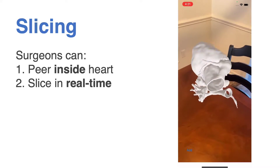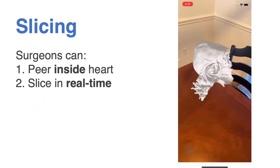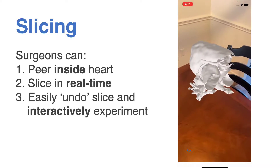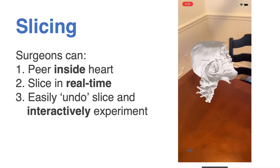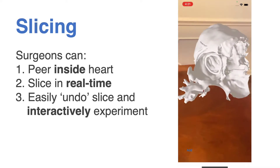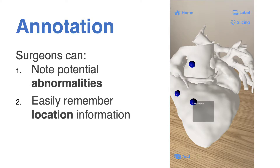The slicing plane can be rotated and translated to allow for different views of the heart's internal structures. Cardiac AR gives surgeons the opportunity to interactively slice and see various structures of the heart to better site potential abnormalities. If a surgeon spots an abnormality, they can easily take note of it with our annotation feature, which allows surgeons to easily remember the spatial location of an abnormality and any issues they may have forgotten.